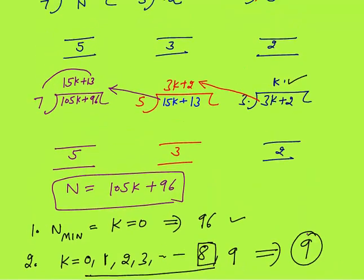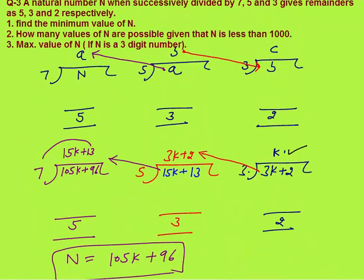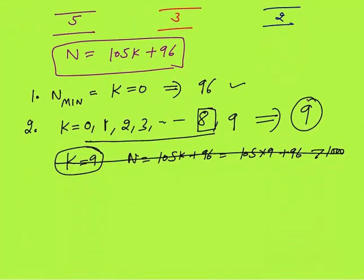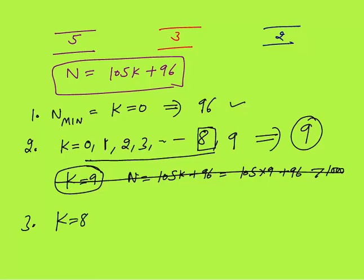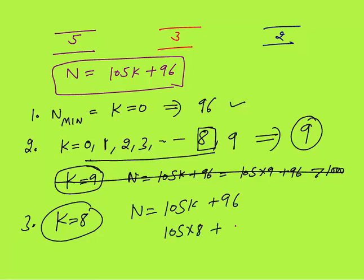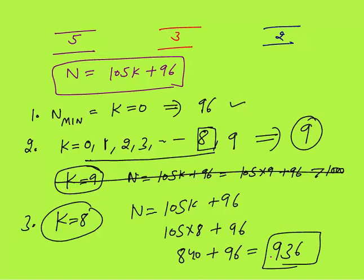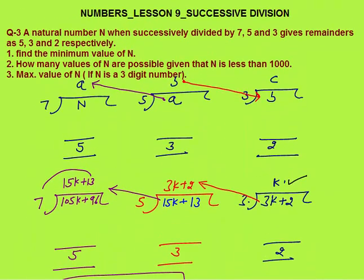K ranges from 0 to 8, giving 9 values, so 9 values of N are possible which are less than 1000. The third sub-question: the maximum three-digit number. This comes when K = 8: N = 105 × 8 + 96 = 840 + 96 = 936. So 936 is the maximum three-digit number which when successively divided by 7, 5, and 3 gives remainders 5, 3, and 2 respectively.